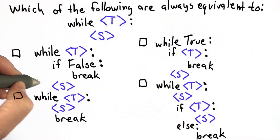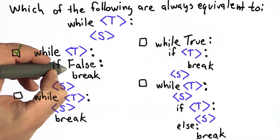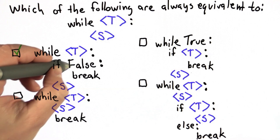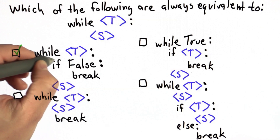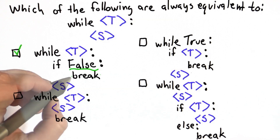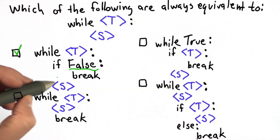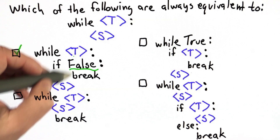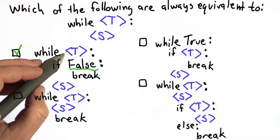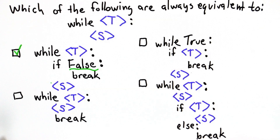The first one is equivalent. The reason for that is we have our code here that has 'if false'. False will never be true, so we'll never actually run the break — we'll never reach that code. We'll just run the statement again and have the same thing we started with. Every time the test is true, we execute the statement.